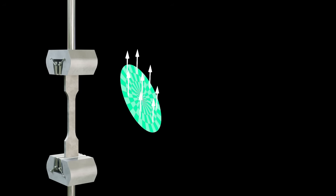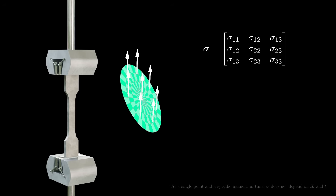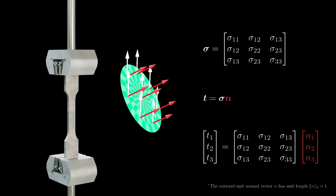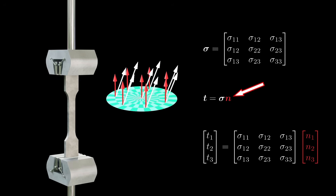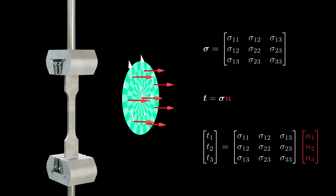So depending on the orientation of the area element, different tractions can act at the same point inside the object — this is exactly why we need a second-order tensor to describe stress at a point. In a fixed coordinate system, the stress tensor sigma is essentially a 3×3 matrix. This matrix contains all the information about the tractions acting on area elements with any possible orientation. We define the stress tensor so that it gives us the traction t when multiplied by a unit vector n perpendicular to the area element. This gives us the traction acting on an area element with any orientation.